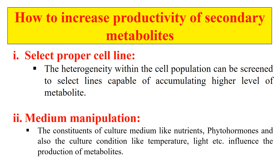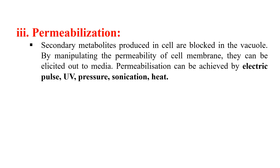For example, it has been seen that if the sucrose concentration is increased from 3% to 5%, then the production of rosamarinic acid is increased five times. So by changing the media composition, we can also increase the level of secondary metabolite production. The next factor is permeabilization — the secondary metabolites are produced in the cell and sometimes they are blocked in the vacuole. By changing the permeability of the cell membrane, we can allow the secondary metabolite to be released into the media. Permeabilization can be achieved by electric shock, ultraviolet light, pressure, sonication, and heat. By giving these treatments, we can change the permeability of the cell wall so that the secondary metabolite comes out of the cell into the medium.